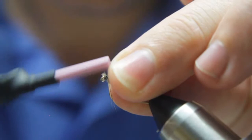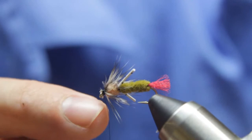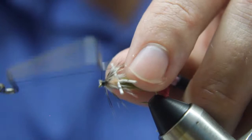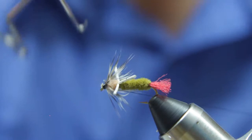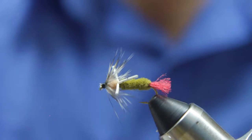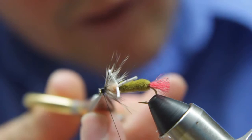And then I'm going to whip finish. You can see I got a little bit too close to the index point there, but it still looks good. I'll do one more whip finish just for comfort. And now we'll cut the thread. And I like to put a bit of head cement. I'm going to use Sally Hansen Hard as Nails on the head.